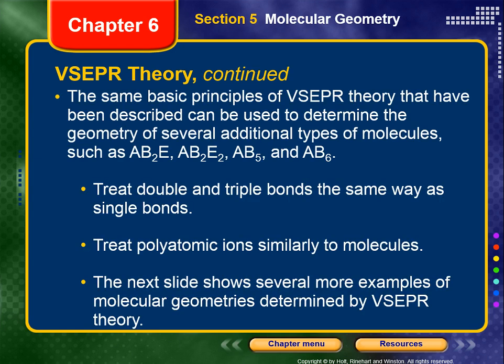The same basic principles of VSEPR theory can be used to determine the geometry of additional molecule types such as AB2E, AB2E2, AB5, or AB6. The E's represent lone pairs of electrons — electron domains. Key things to memorize: treat double and triple bonds the exact same way as single bonds in terms of overall geometry, and treat polyatomic ions similarly to molecules. The next slide shows several more examples of molecular geometries determined by VSEPR theory.